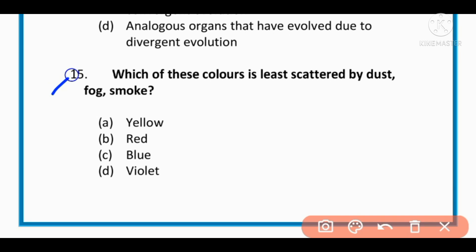MCQ number 15: Which of these colors is least scattered by dust, fog, and smoke? Yellow, red, blue, or violet. The correct option is red. Red color is least scattered by dust, fog, and smoke.